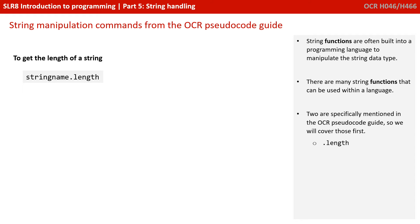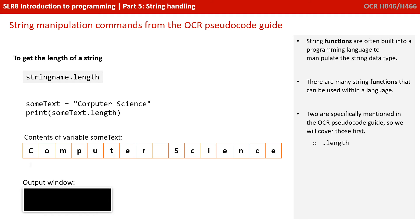The first is dot length. The dot length function is a function you can append to a string, so you'd use 'string_name.length'. Here we have a variable called 'some_text' set to 'computer science', and then 'print some_text.length'. The variable contains the text 'computer science', and dot length literally reports the number of characters, including spaces, that are in that variable.